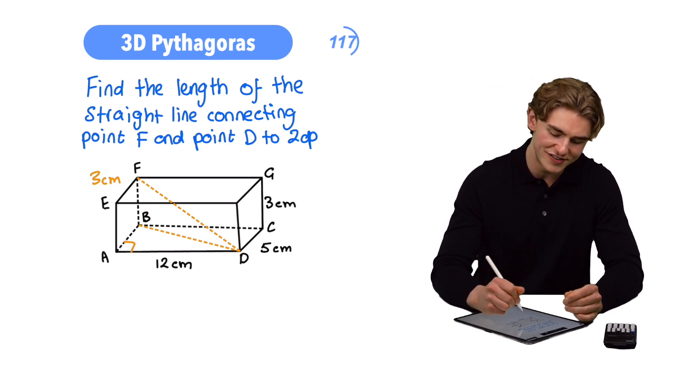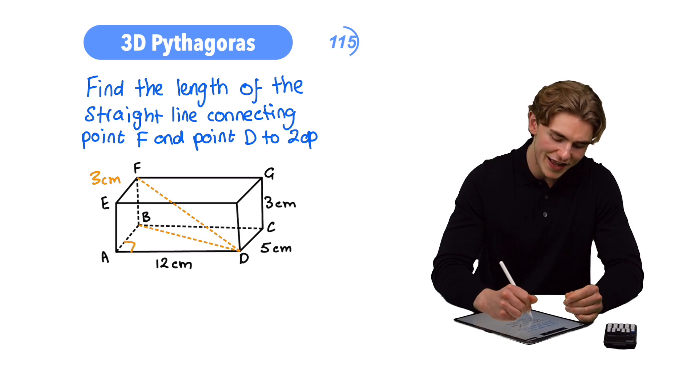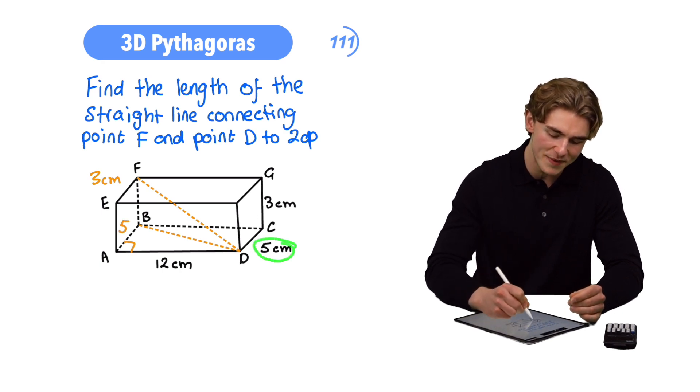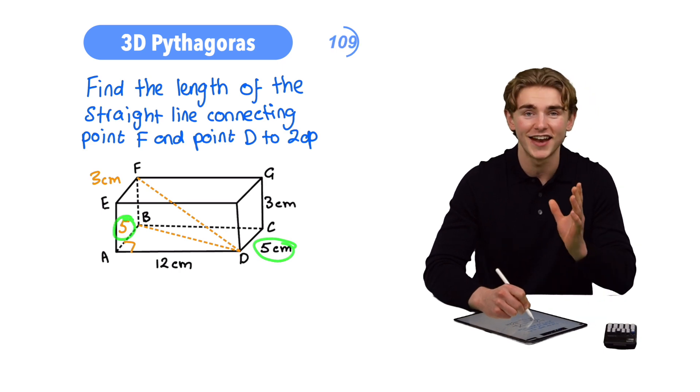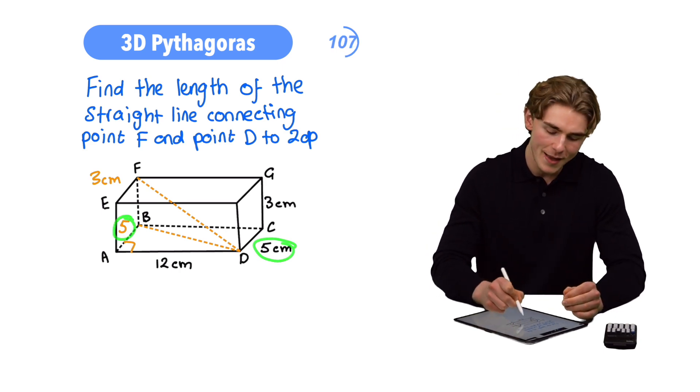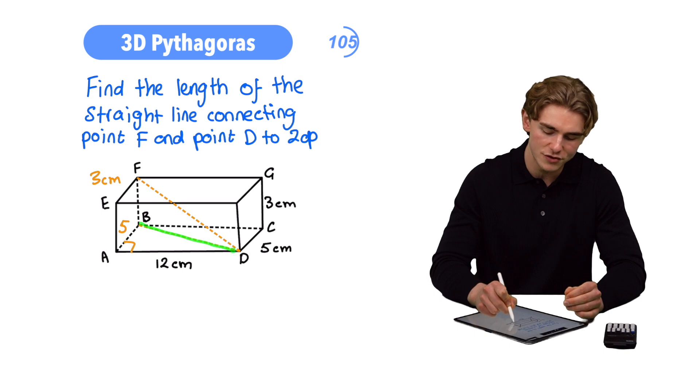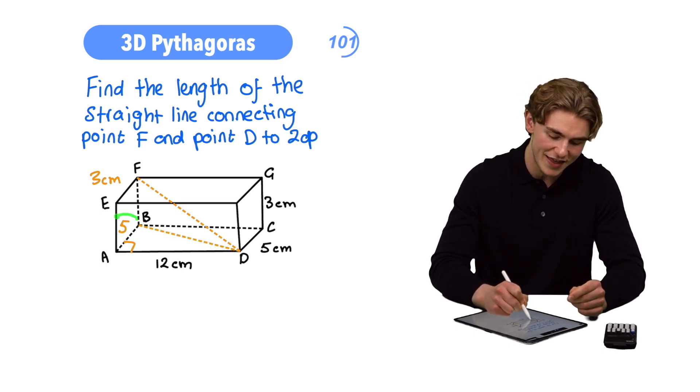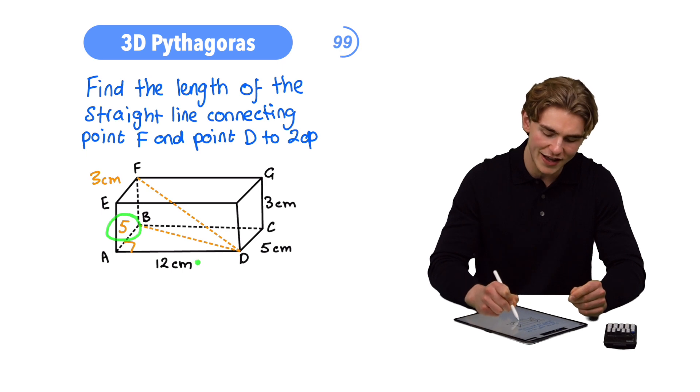Now, what are we going to do? We're going to use Pythagoras' theorem. We can write on that the side length AB is 5, and that's because CD is 5, and AB is opposite that side length. Now, we can use Pythagoras' theorem, because BD is going to be the hypotenuse of the triangle, of the triangle which has one side length here of 5, another side length here of 12.